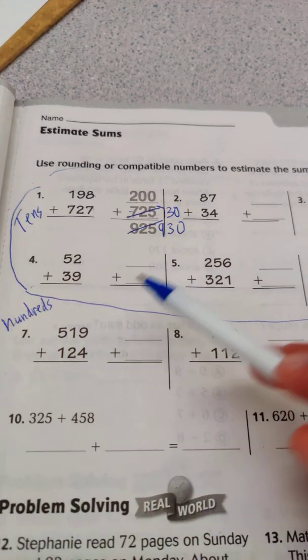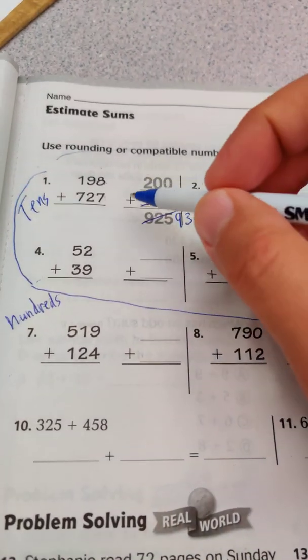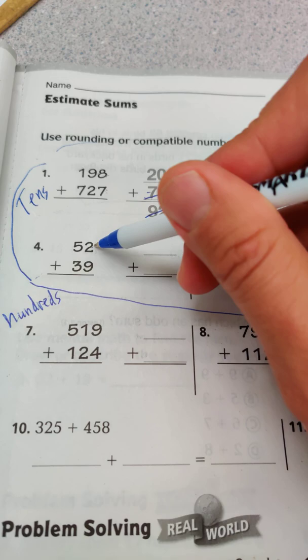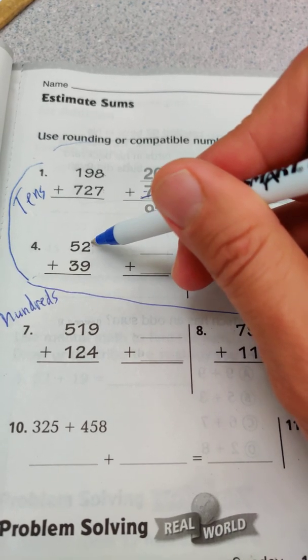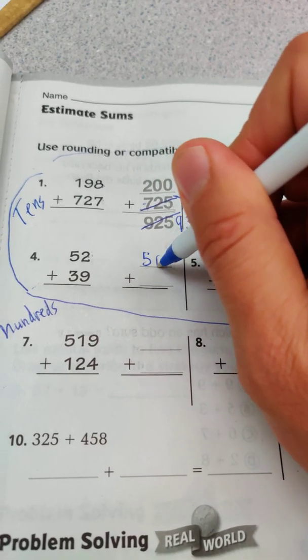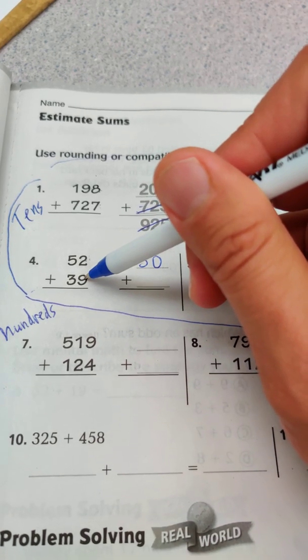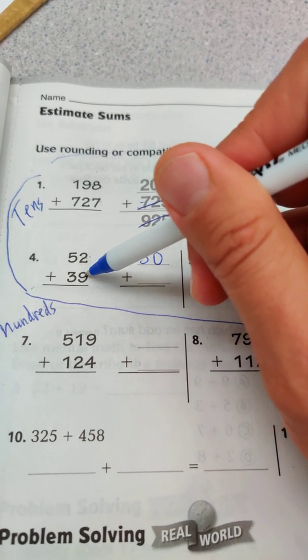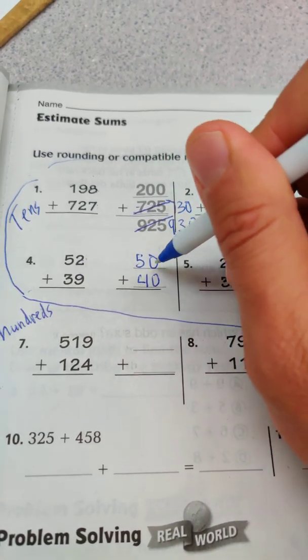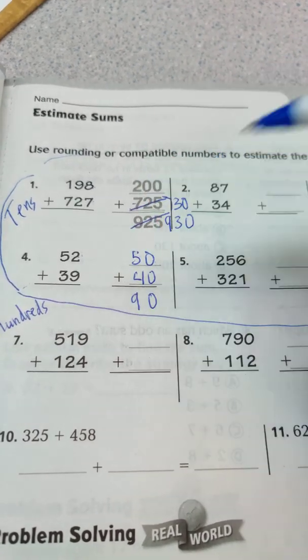I'll do two more: number four and number seven. For number four, rounding to the nearest tens, we look at the ones. It's less than five, so we don't round up. 52 stays 50. For 39, the ones is higher than five, so we round up to 40. Zero plus zero, five plus four is nine, equals 90.